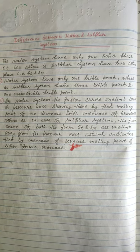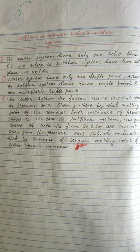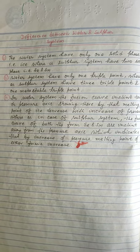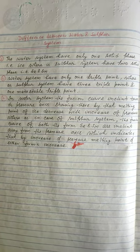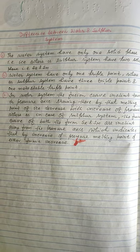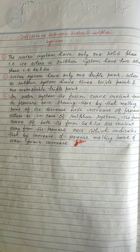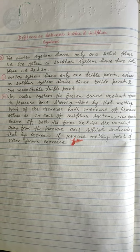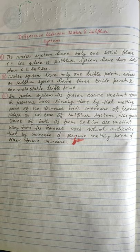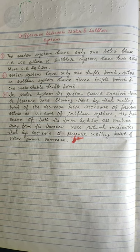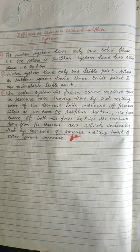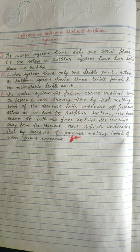Today I will discuss the difference between the water and sulfur systems. In the case of the water system, there is only one solid phase, that is ice. Whereas in the case of the sulfur system, there are two solid phases: sulfur rhombic and sulfur monoclinic.